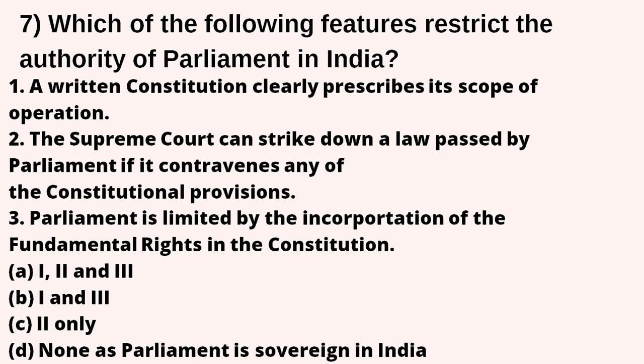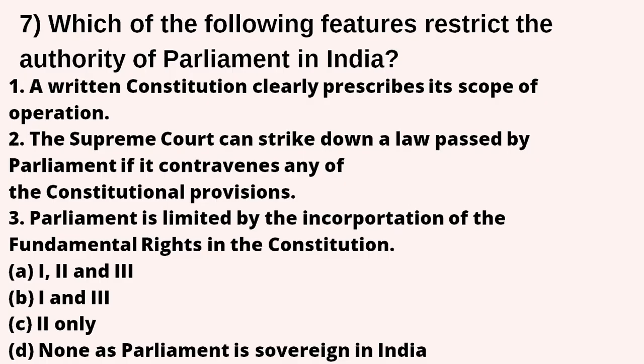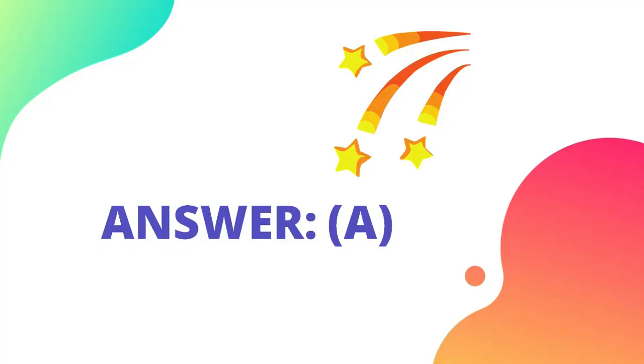Which of the following features restrict the authority of the Parliament in India? Statement 1: a written Constitution clearly prescribes its scope of operation. Statement 2: the Supreme Court can strike down a law passed by the Parliament if it contravenes any constitutional provision. Statement 3: Parliament is limited by the incorporation of fundamental rights in the Constitution. Options: A — 1, 2, and 3; B — 1 and 3; C — 2 only; D — none. The right answer is option A — all three: 1, 2, and 3 are correct.